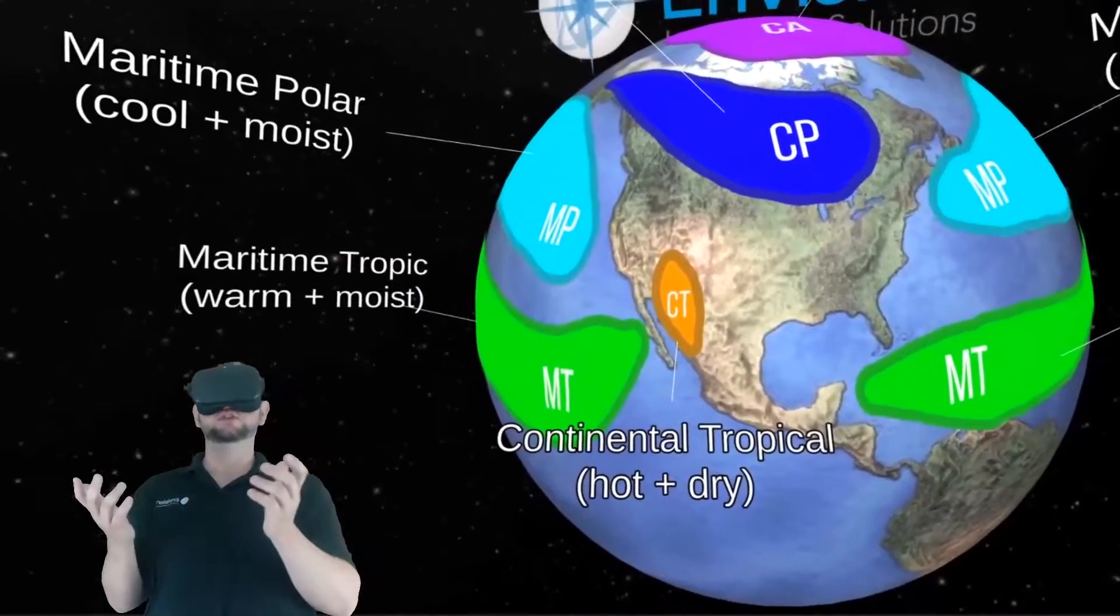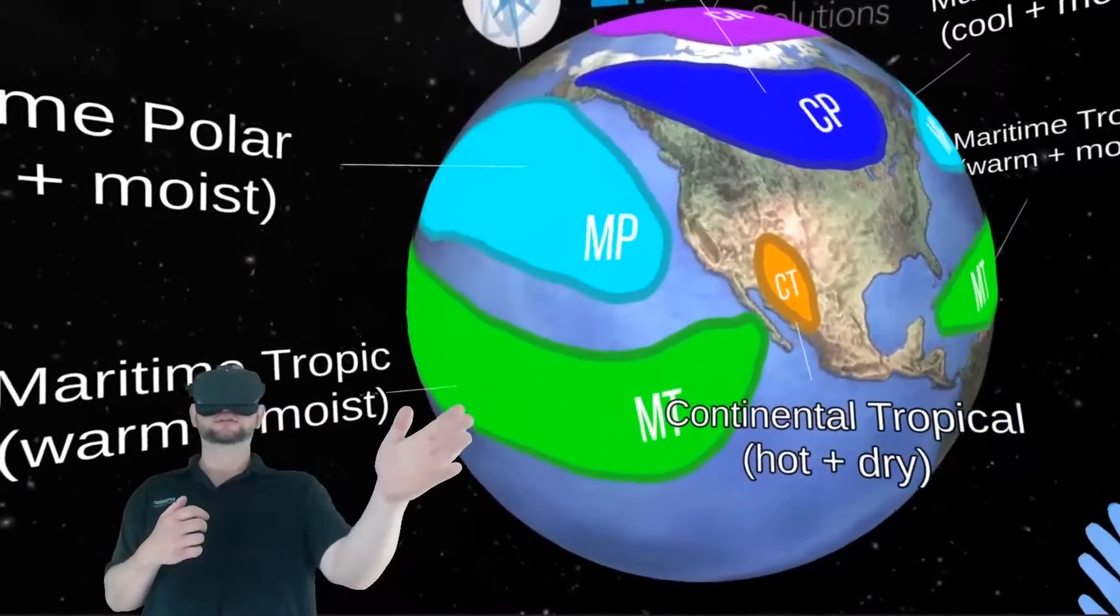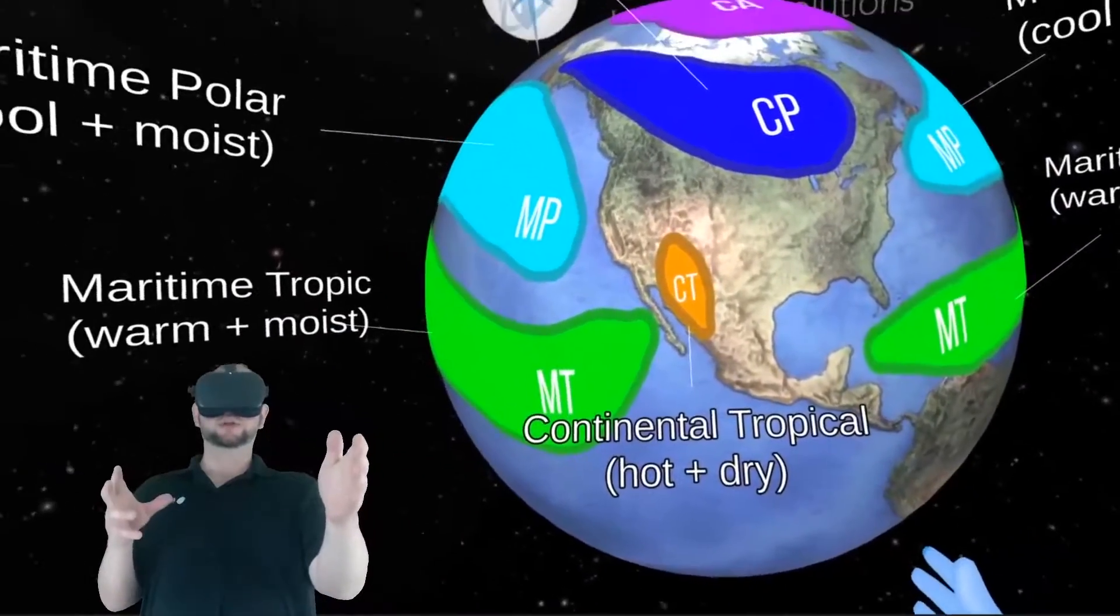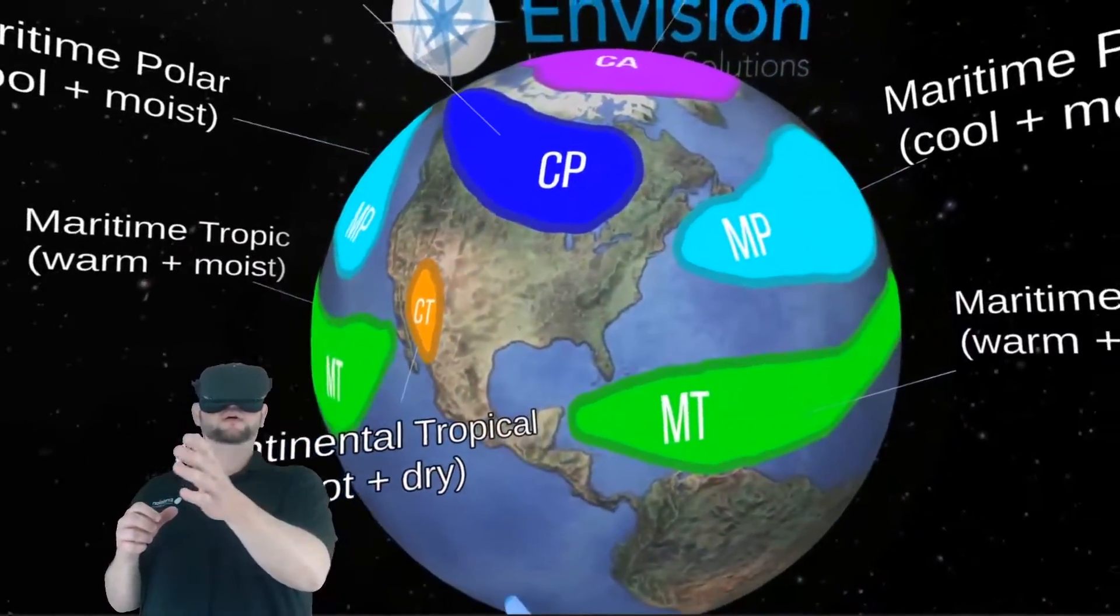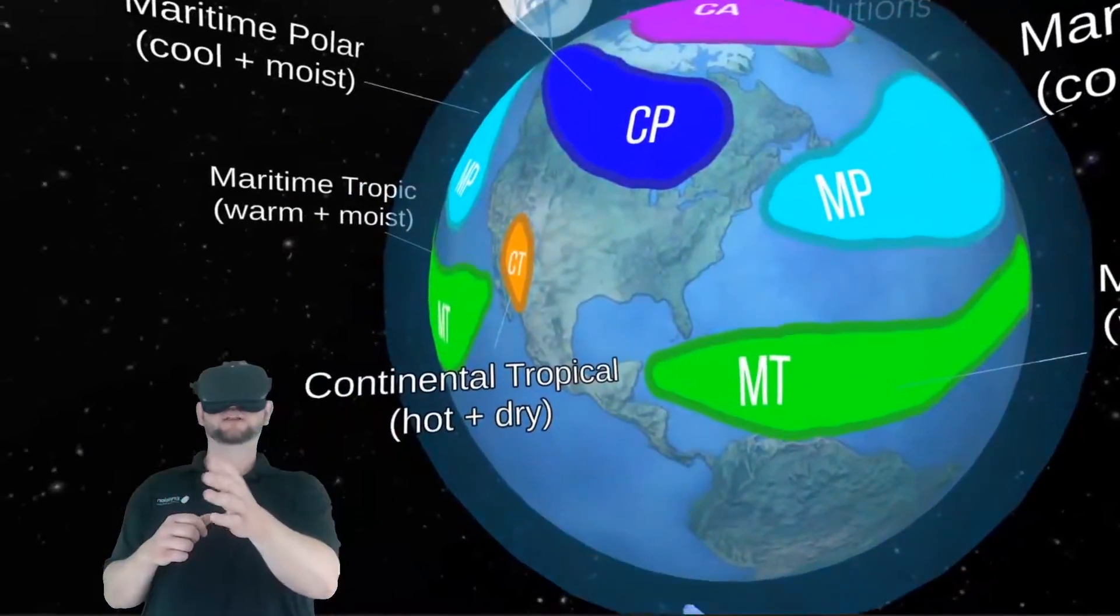To the west and east you have maritime tropical air masses. And that's going to be your most humid and warm air mass where hurricanes typically like to develop in.